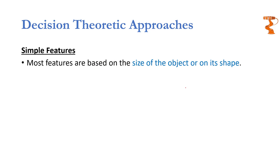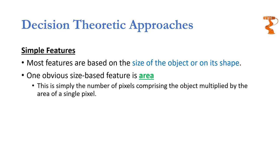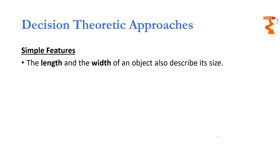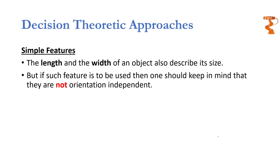In an industrial setup, objects can be recognized based on features linked to their size or shape. One obvious size-based feature is area — the number of pixels comprising the object multiplied by the area of a single pixel. If we take the area of a single pixel as a unit area, the number of pixels directly represents the area. A modified version called integrated optical density is equivalent to area multiplied by the average gray level of the object, and it also represents the weight of the object. We can also use length and width to describe size.